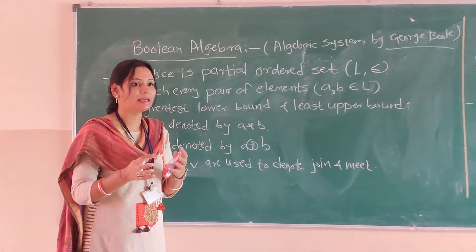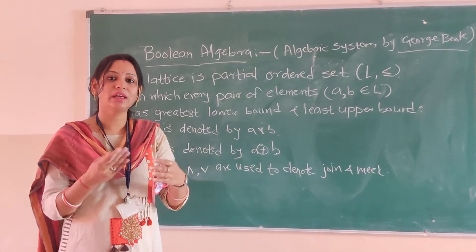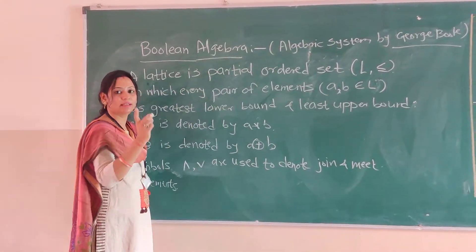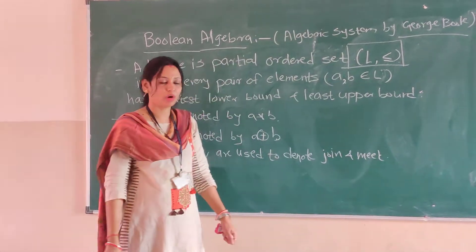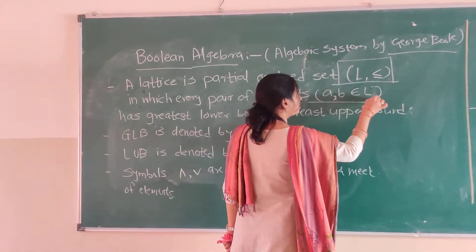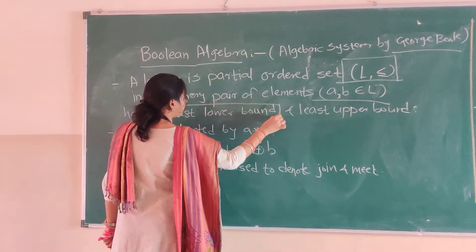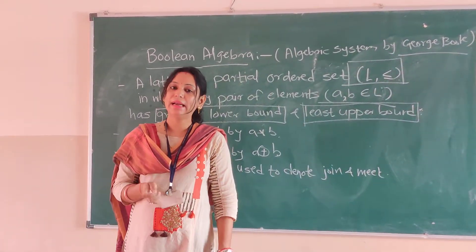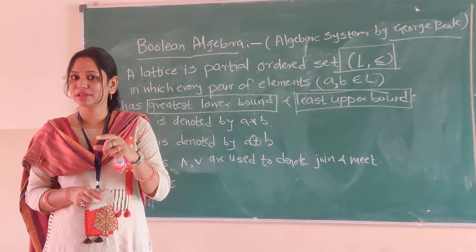Boolean algebra mainly contains the concept of lattice. The lattice is a partial order set, denoted by L with a symbol, in which every pair of elements A and B that belongs to this particular lattice has a greatest lower bound and least upper bound. These concepts we have seen when we covered partial order sets and partial order relations.